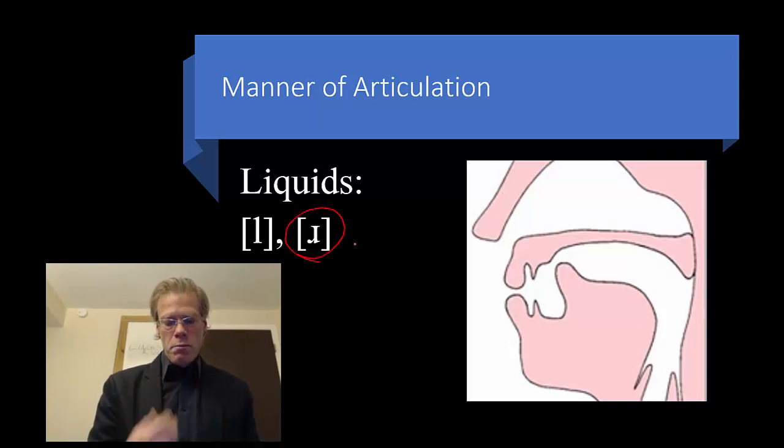And likewise with the ur sound, and I did it right this time of having it be an upside down R as it should be for English. And again it's typically going to be retroflex in English. But again the air is able to freely pass by the tongue. It's not a very tight constriction.